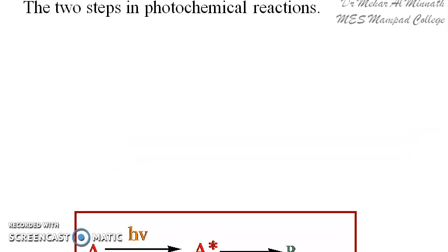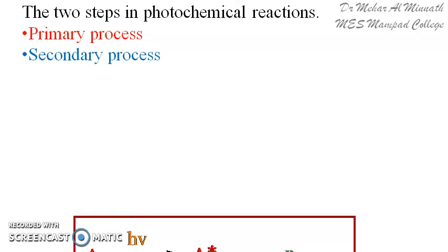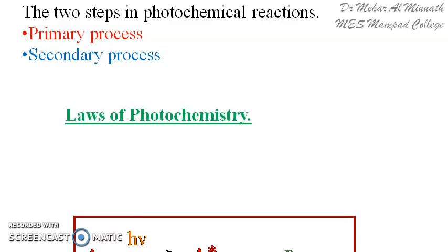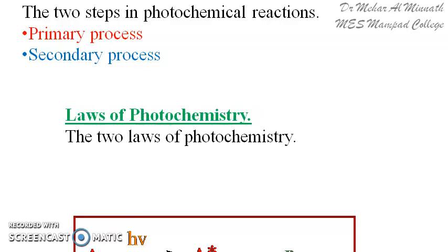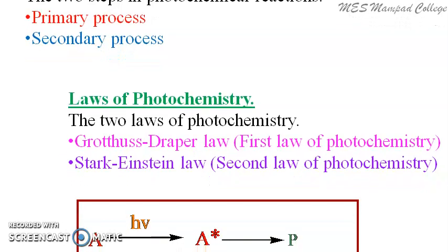It is in the primary step that light absorption happens, and in the secondary process it can happen even in the absence of light — it can also be considered a dark reaction. The rate of a photochemical reaction will be more decided by the rate of the primary process wherein absorption of light happens. The photochemical reaction is also governed by two laws of photochemistry: the Grotthuss–Draper law and the Stark–Einstein law. The Stark–Einstein law is related to the primary process wherein absorption of light happens.